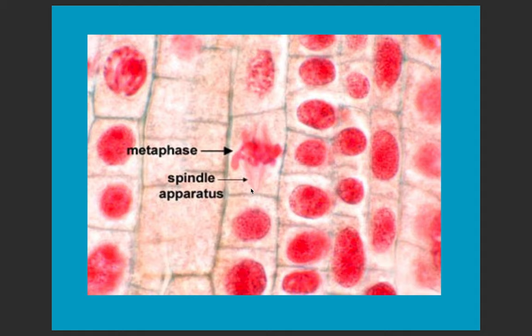Here you can see a different image showing the spindle apparatus forming with a different colored dye. The chromosomes are lining up as the spindle apparatus forms. To review: a cell in interphase has chromatin spread out throughout the cell. This cell looks like it's in prophase because the chromosomes are condensing, but they have not lined up yet like they have in this metaphase cell.